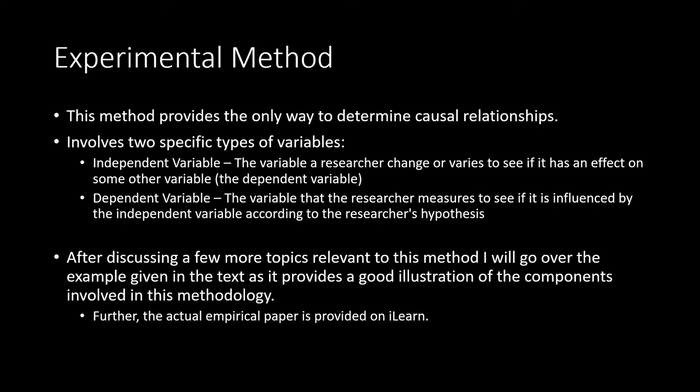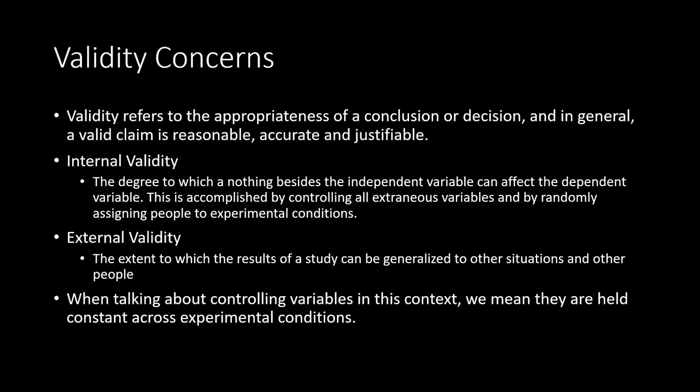I'm going to discuss a few more topics relevant to the experimental method, and then we'll go over the example given in your textbook, as I think it provides a very good illustration of this methodology. I highly recommend reading along in both the book and the actual empirical paper I have provided on iLearn. The first thing is validity concerns. Validity refers to the appropriateness of a conclusion or a decision — in general, a valid claim is reasonable, accurate, and justifiable.